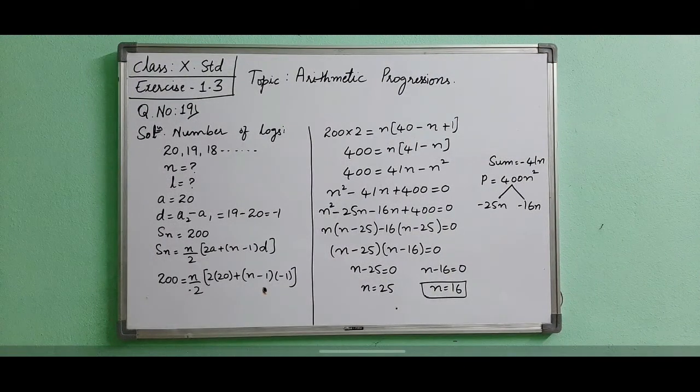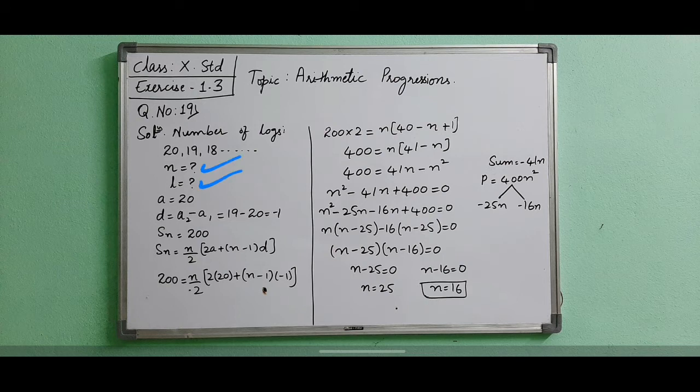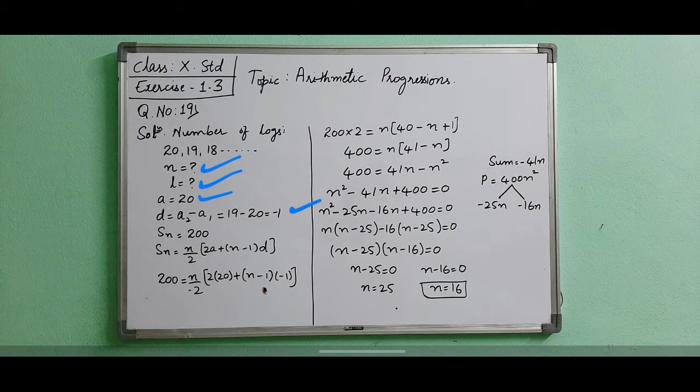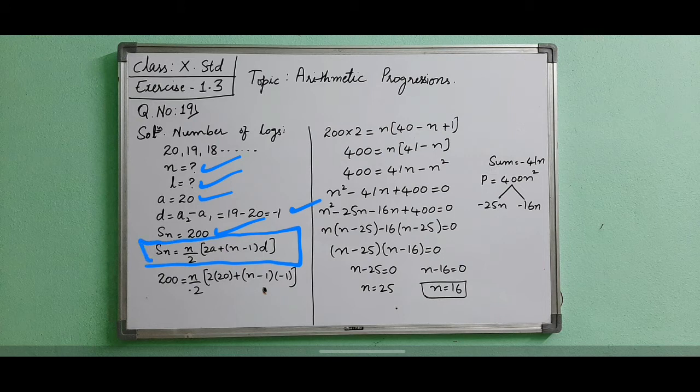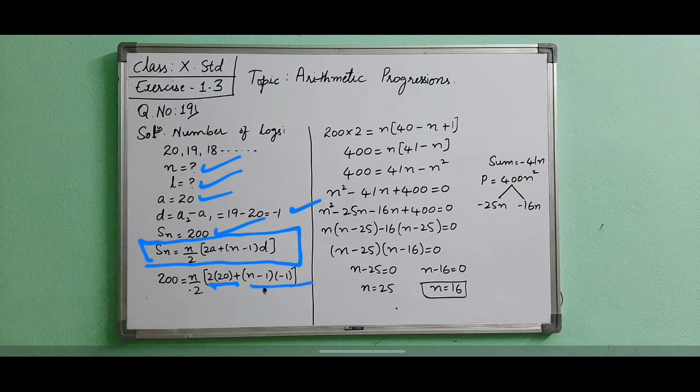We have to find the last number. a is given as 20. The difference is a2 minus a1. 19 minus 20 is minus 1. The sum is given as 200. If we substitute in the Sn formula, 200 equals n by 2, a is 20, n minus 1 into minus 1.